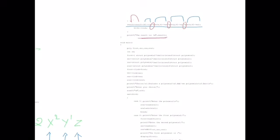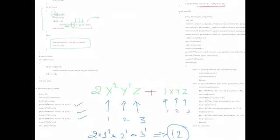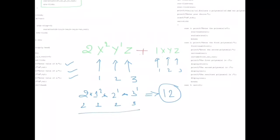The result accumulates using result-plus because there may be more than one term. For example, a second term with coefficient 1 and powers x=1, y=1, z=1, with x=1, y=2, z=3 gives 1×1×2×3=6. Added to the previous result of 12, the final result becomes 18. This is how all terms are evaluated and summed.